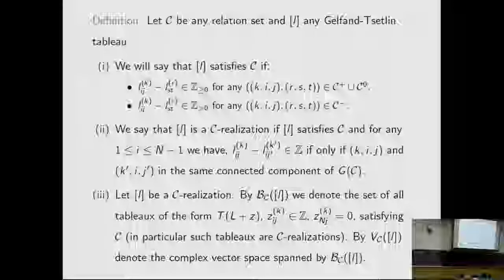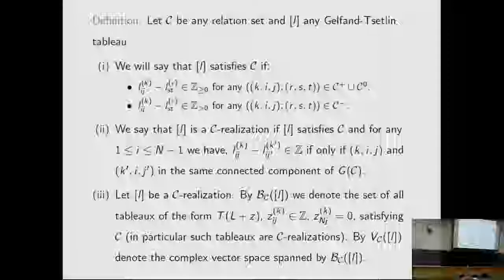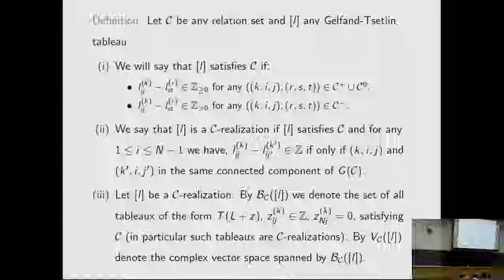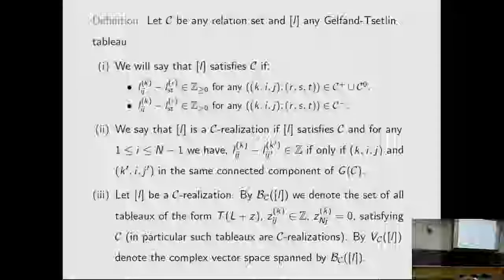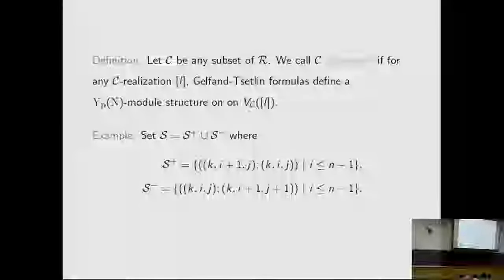Let C be a C-realization. We define a basis B_C(L) as the set of all tableaux of the form T of L plus C, where the top row of Z is zero and all other entries are integers. By V_C(L) we denote the vector space spanned by B_C(L). Let C be any subset of R. We call C admissible if for any C-realization, the Gelfand-Zeitlin formulas define a Yangian module structure on V_C(L).